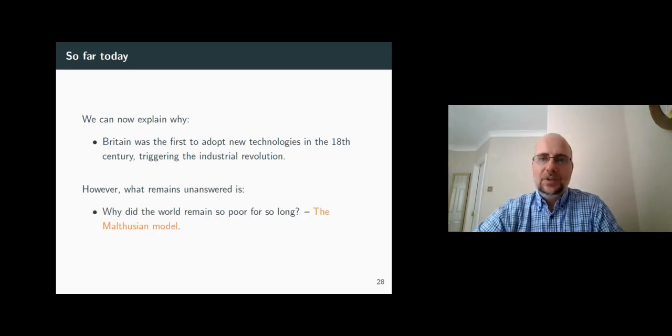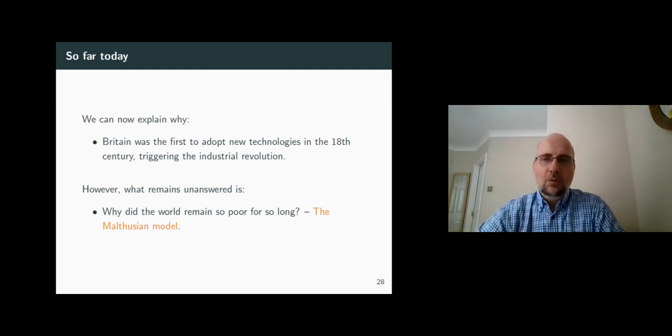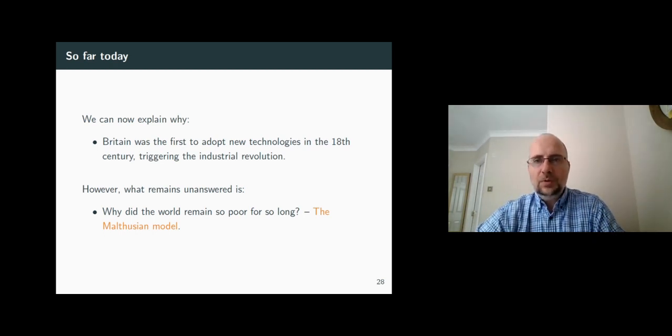In the rest of this week's videos, we will bring an intuitive model to explain why the world has remained poor for so long. We call the framework explaining the lack of permanent prosperity the Malthusian model. To understand the model properly, we will need an important building block. We call this building block the production function. The next video discusses the production function, so please keep watching.